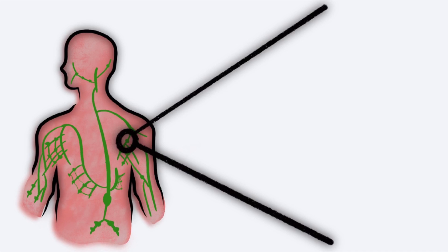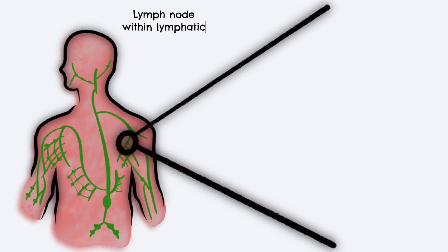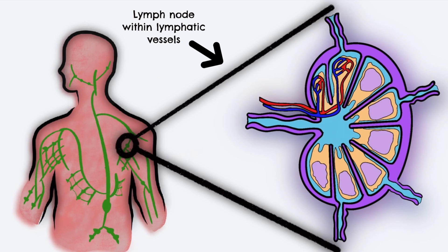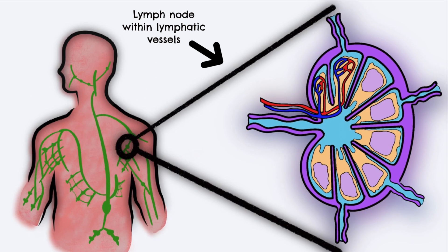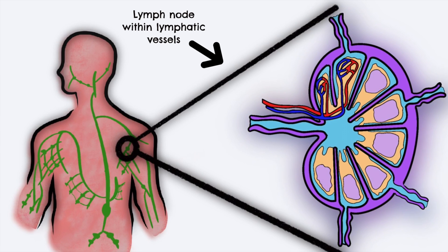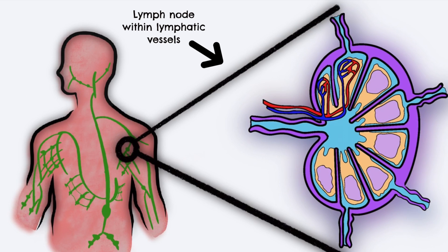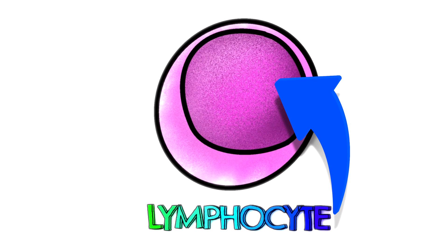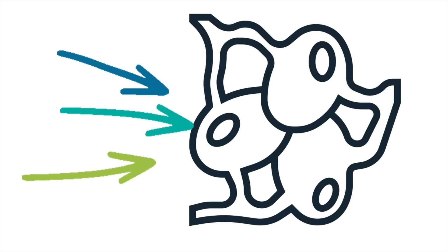Let's start by recapping the function of the lymphatic system. The lymphatic system is a network of tissues and organs that serve to drain tissue fluid, plasma proteins and other cellular debris back into the bloodstream. The system also has important immunological function and can produce lymphocytes and other immune cell subsets to destroy any foreign pathogens that may enter the body.